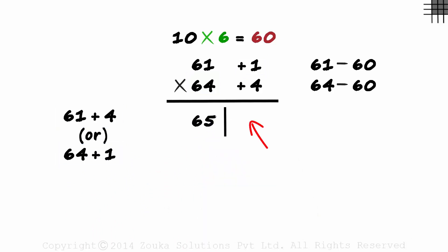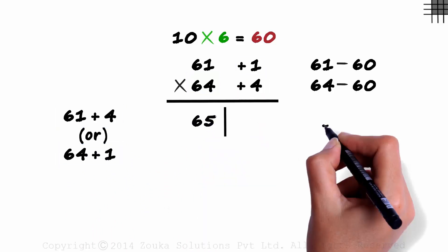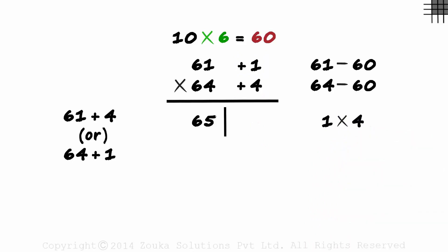And on the right, we have the product of the deviations. One multiplied by 4 equals 4. As there is just one zero in the base, we will have one digit on the right. We write a 4 here.